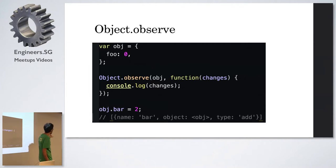For example, after attaching this observer and if I just say obj.bar equal to 2, then what happens is that your function gets this change notification saying that a new property called bar is added to your object. And what is the new value of it and what type it is, whether it's an add operation, update operation, delete operation and so on.